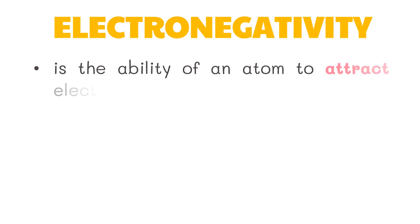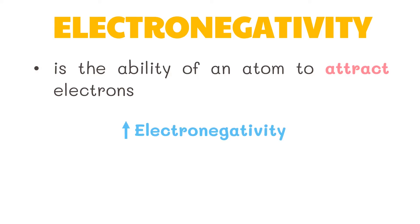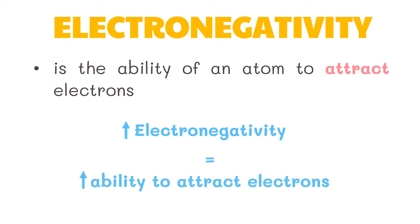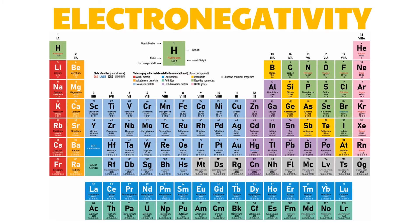Electronegativity is the ability of an atom to attract electrons. The higher the electronegativity value of an atom, the higher is its ability to attract electrons. In period 2 of the periodic table, fluorine is located at the rightmost part of the row. Hence, fluorine has the highest electronegativity value and it is the atom that is most likely to attract electrons. Thus, it has the highest tendency to gain electrons and become negatively charged.